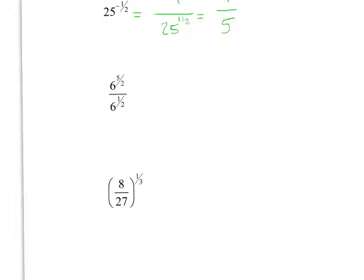When you have a fraction, in the same base, you subtract the exponents, so this will be 6 to the, well 5 minus 1, since it's a common denominator, it will be 4 halves, so this will be really 6 squared, which is 36.